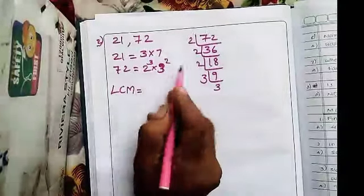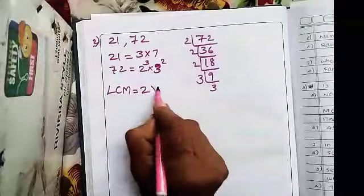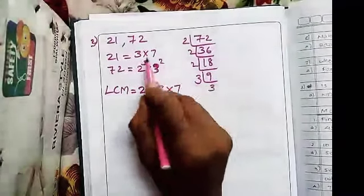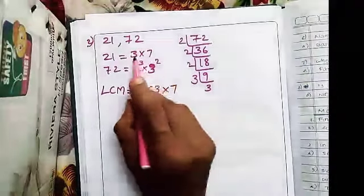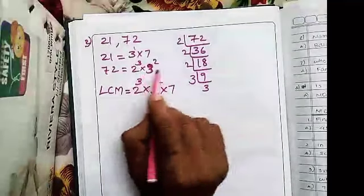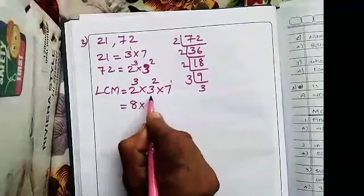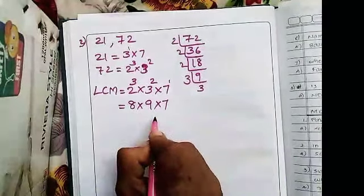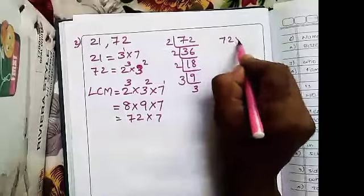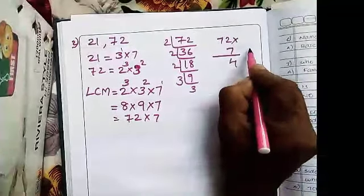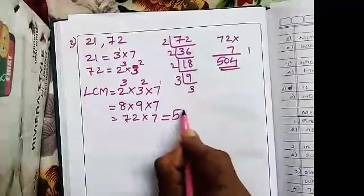Finding the LCM of 21 and 72: select all the different prime factors, which are 2, 3, and 7. Select the highest powers: 2 cubed, 3 squared, and 7 to the 1. So LCM equals 2 cubed into 3 squared into 7, which is 8 into 9 into 7. 8 into 9 is 72, and 72 into 7 is 504. So the LCM is 504.